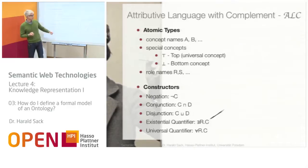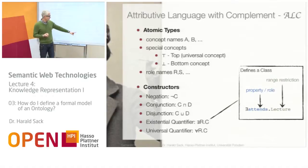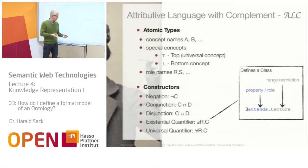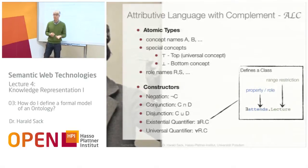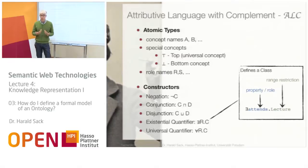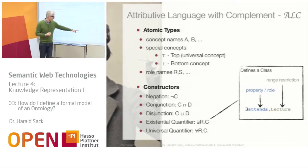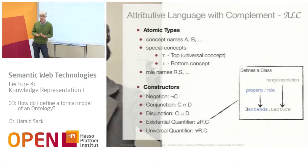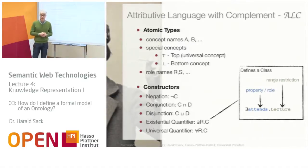Consider a simple example: we define a class where the property 'attends' has 'Lecture' as its range — a person attends a lecture. Using the existential quantifier, we define a class of all individuals attending a lecture, but they may also attend something else. Using the universal quantifier, those individuals must visit a lecture and nothing else. This difference is subtle but we will return to it in exercises.